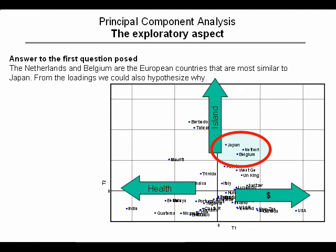We also get an answer to the other question we posed initially: which country in Europe is most similar to Japan? We can see that would be the Netherlands or Belgium. Those two questions that we posed initially, which were quite difficult to answer from the data table, are very simple to answer when we just look at the plots.